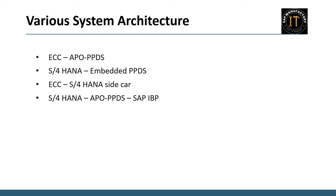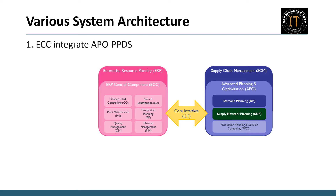The four key architectures are: first, integration of ECC with APO PPDS; second, adopting embedded PPDS within S/4 HANA; third, leveraging ECC and S/4 HANA as a sidecar; and the last one is the alliance of S/4 HANA, APO PPDS, and SAP IBP.